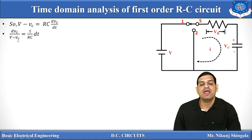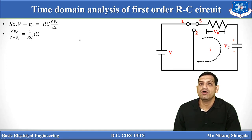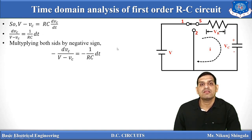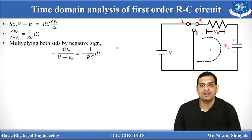Now multiplying both sides by negative one, we get: minus dVC divided by (V minus VC) equals minus (1/RC)·dt. This is done because when we integrate 1/(V minus VC) with respect to VC, we get a negative value. So both sides are multiplied by the negative sign to simplify the integration.